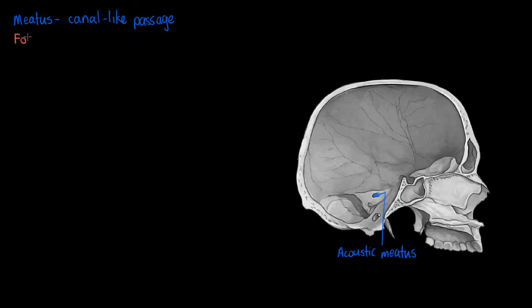Our next term is called a fossa. A fossa is a basin-like depression that is often the surface for articulation of a joint, but we see them in many areas of the body. The example I'll show you here is on the internal surface of the skull. It's called the posterior cranial fossa. I'm just highlighting it here, and if I shade it in, we can see it's a depression on the internal surface of the skull towards the back or dorsal side of the body.